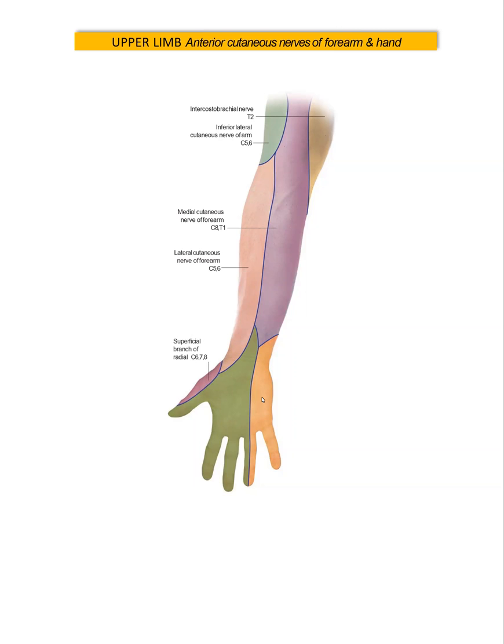We have the superficial branch of the radial nerve, with nerve root values C6, C7, and C8.